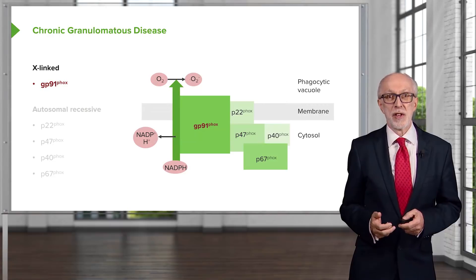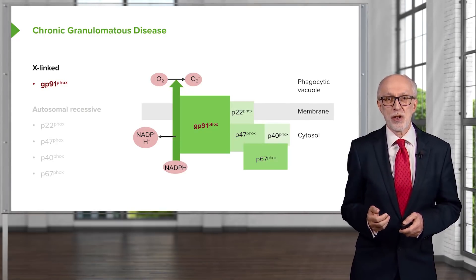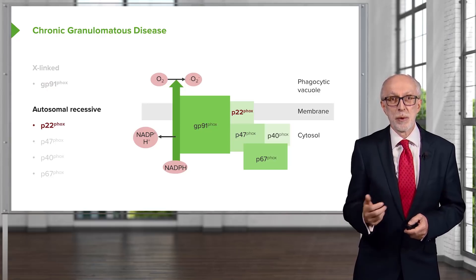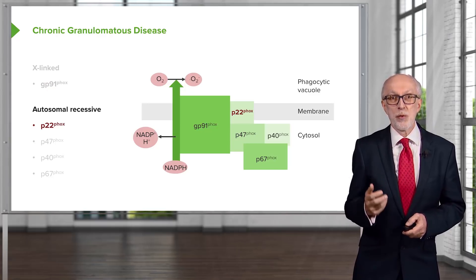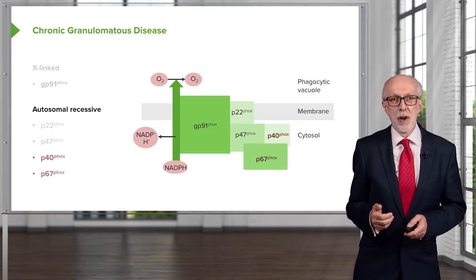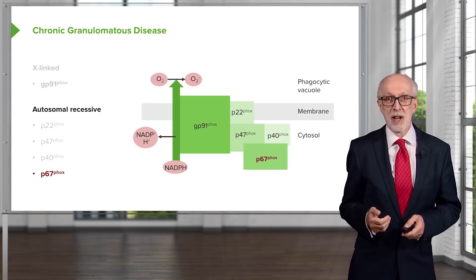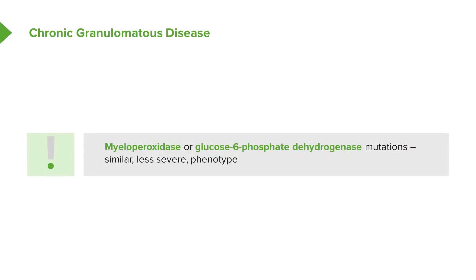A defect in the gene encoding the GP91-PHOX component of the NADPH oxidase is the X-linked form of this disease, because that gene is present on the X chromosome. The genes for the other components are found on the autosomes, and the autosomal recessive P22-PHOX, P47-PHOX, P40-PHOX or P67-PHOX variants of chronic granulomatous disease are caused by gene defects in these autosomal genes. In a minority of patients, genetic mutations in myeloperoxidase or glucose-6-phosphate dehydrogenase genes lead to a similar but less severe phenotype.